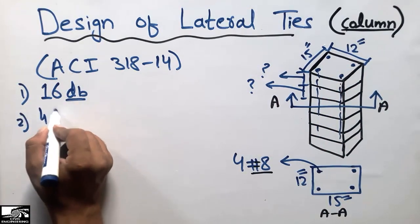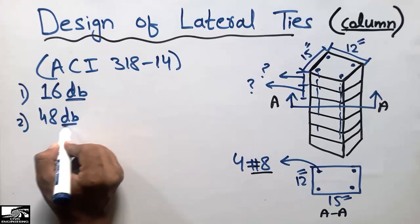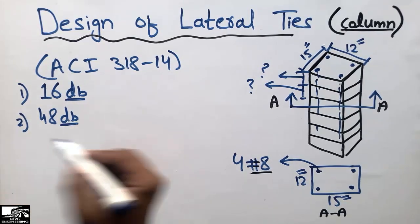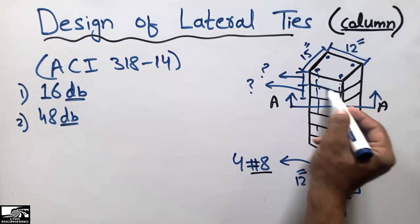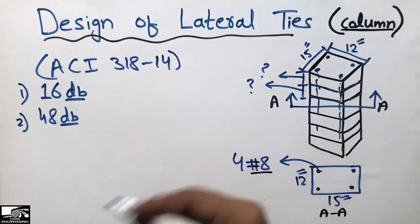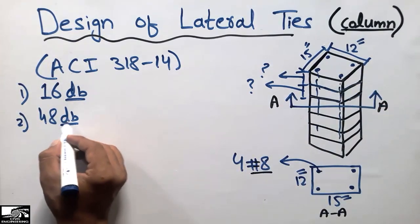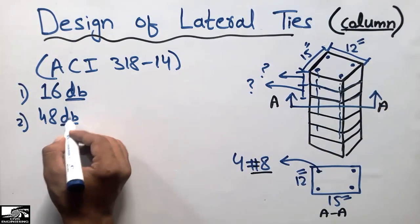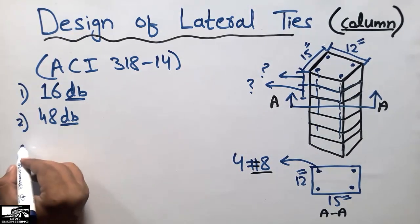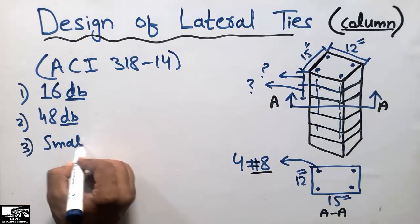The second formula is 48 times the diameter of the tie bar (48 × db_tie). This is the diameter of the tie bar — whichever tie diameter you are using in this column. You multiply that diameter by 48 to get the value.